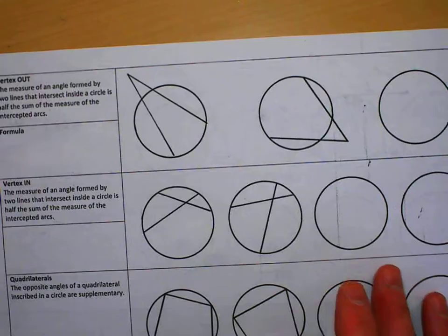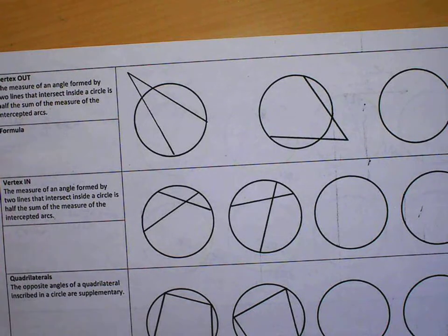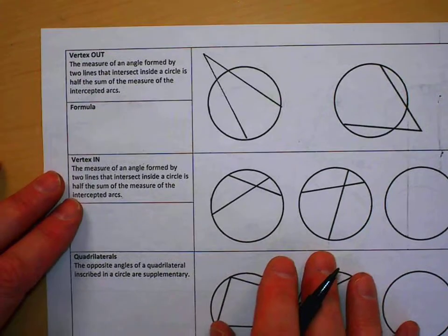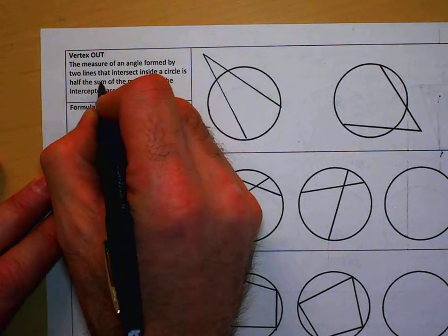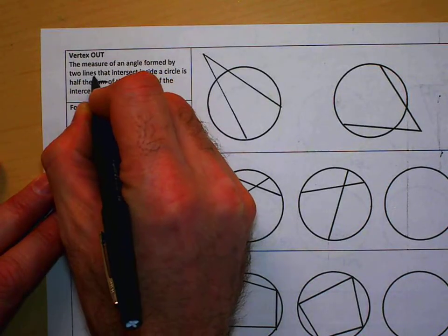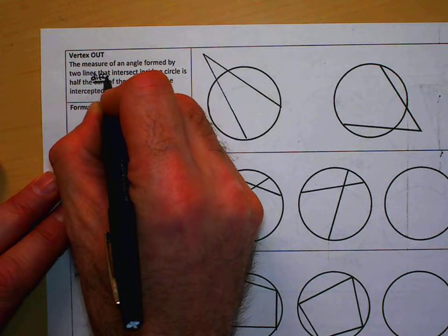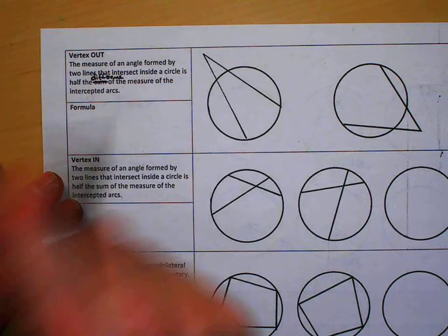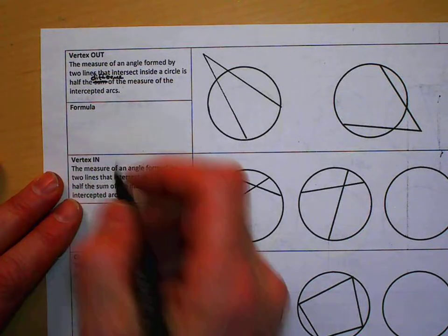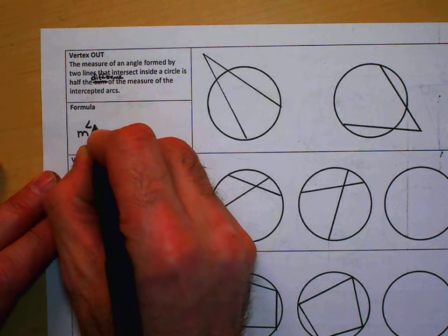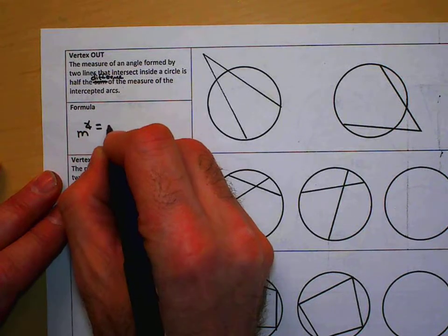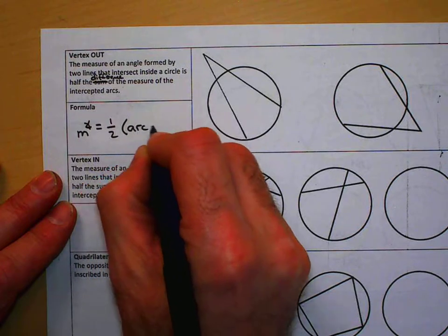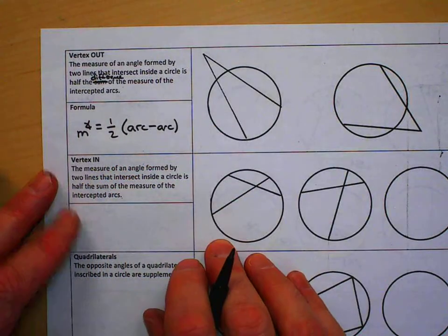Flipping over to the other side, I have some examples here. If it's outside, the vertex—if it's outside, it should be the difference of the two measures. Meaning that the measure of the angle will equal one half the difference: the larger arc minus the smaller arc.